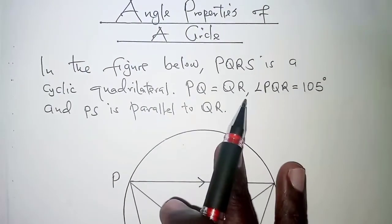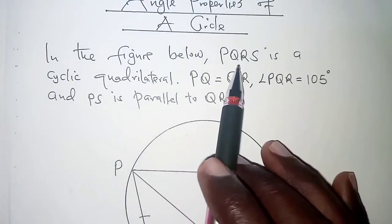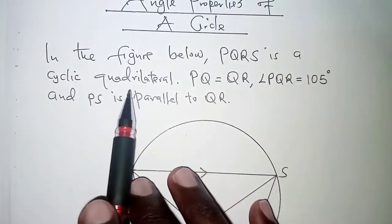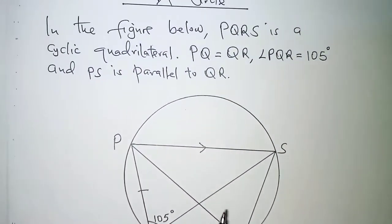So the question here is on angle properties of a circle. It reads in the figure below PQRS is a cyclic quadrilateral. We have the figures shown then PQ is equal to QR.